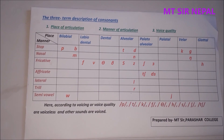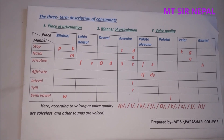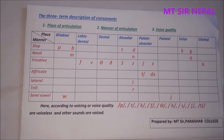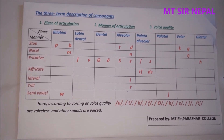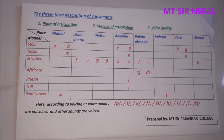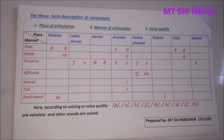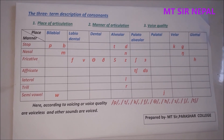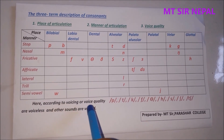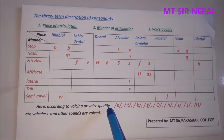Hello, namaste to everyone. Today we are going to discuss a very important topic: the three-term description of consonants. We are mainly focusing on how to describe consonants using three criteria. First is voice quality, second is place of articulation, and third is manner of articulation.